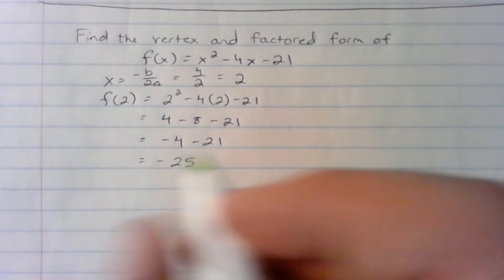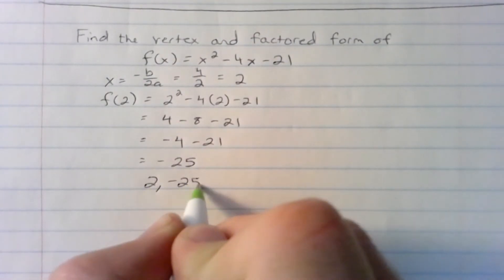So our vertex, 2 comma negative 25. We'll go back to that.